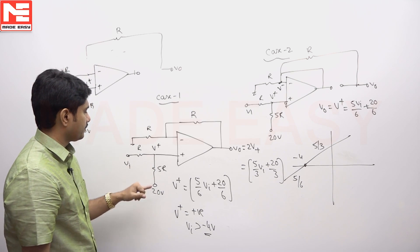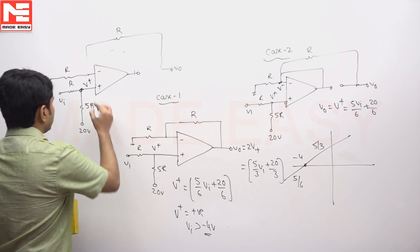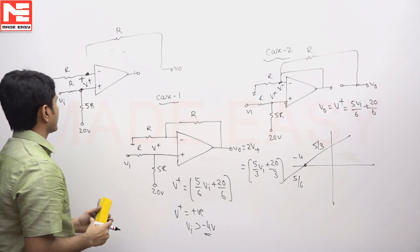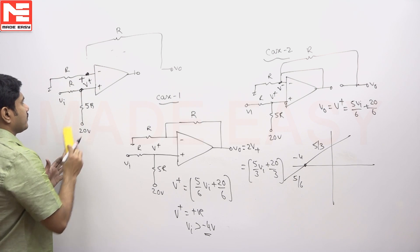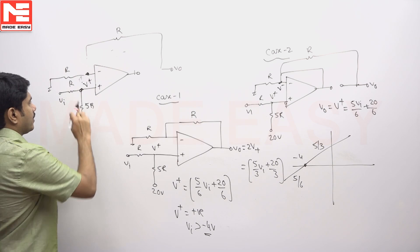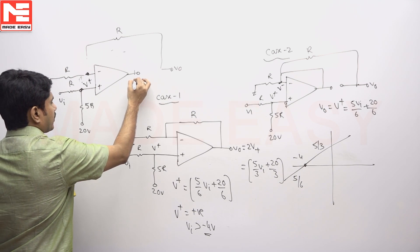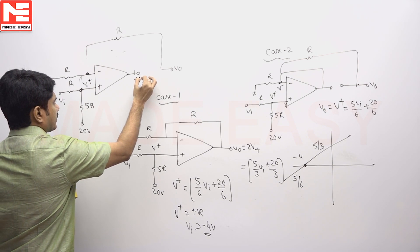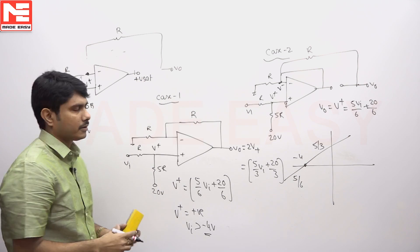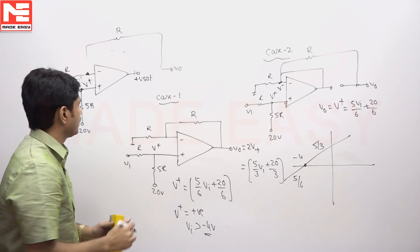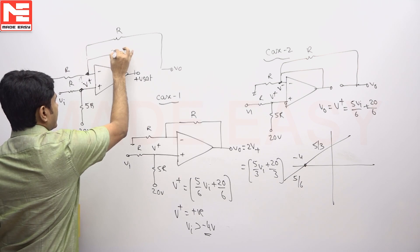If VI is positive, then this point will be positive. When VI is positive, we will see the output will come as positive answer, that is plus V sat.